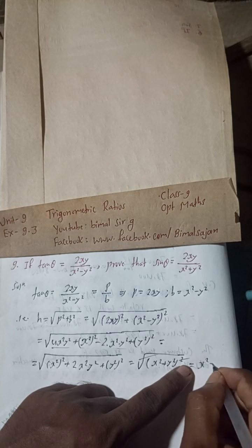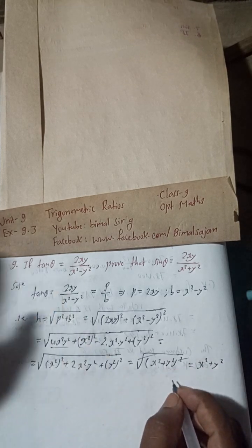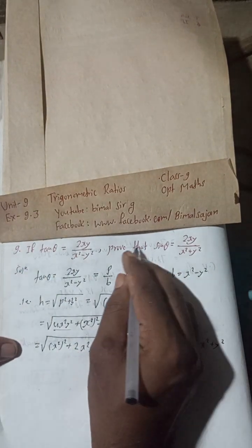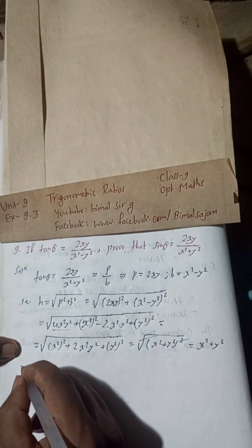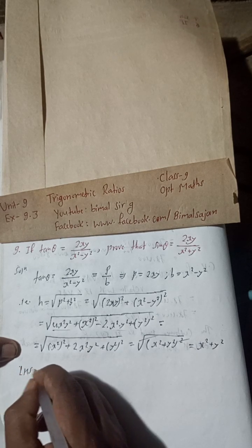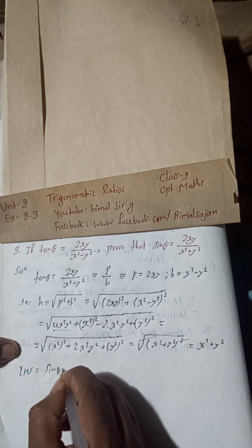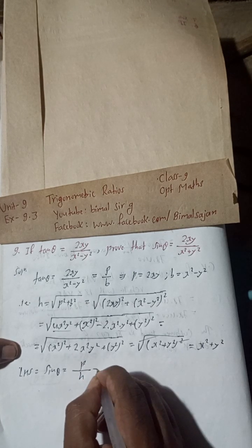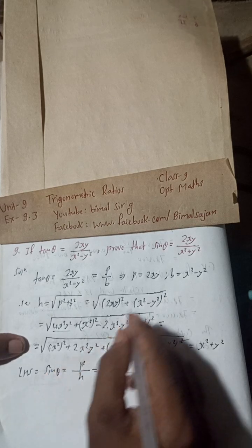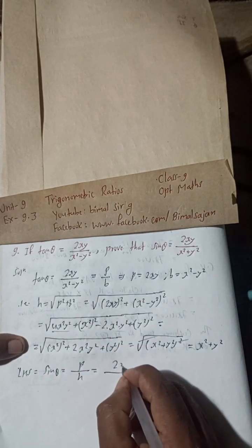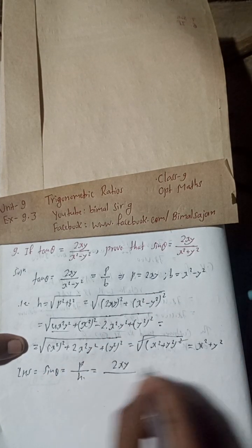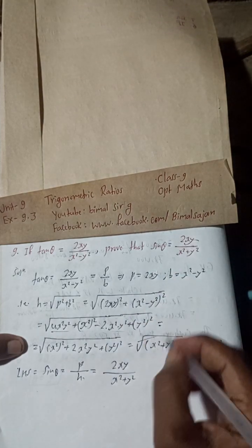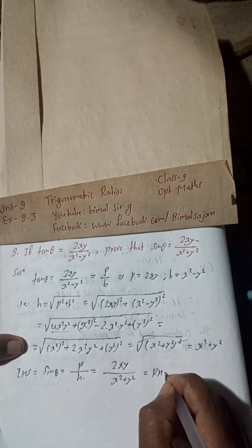Now sin θ = P/H, that is perpendicular over hypotenuse. Perpendicular P = 2xy, and hypotenuse H = x² + y². Therefore sin θ = 2xy / (x² + y²), which is equal to RHS. Hence proved.